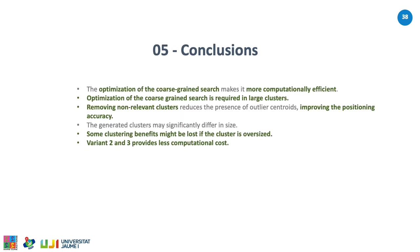In conclusion, the optimization of the coarse-grain search makes it more computationally efficient, especially when the number of clusters is large. As a side effect, removing non-relevant clusters reduces the presence of outlier centroids and therefore slightly improves position accuracy. The proposed filtering at coarse search based on relevant clusters works when it is neither too restrictive nor too permissive. The generated clusters may significantly differ in size, and the time cost of the fine-grain search depends on the cluster where the operational fingerprint falls. Some clustering benefits might be lost if the cluster is oversized. Variants 2 and 3 successfully deal with this issue, reducing the computational cost of traditional k-means to almost half. Thank you for listening.